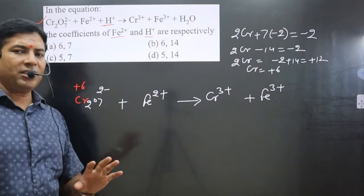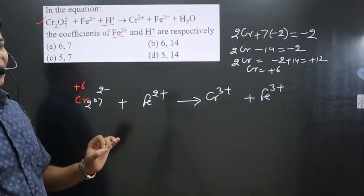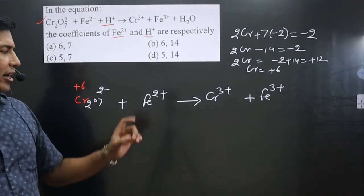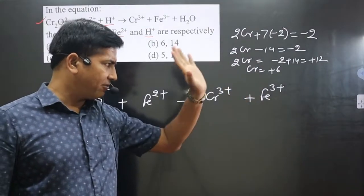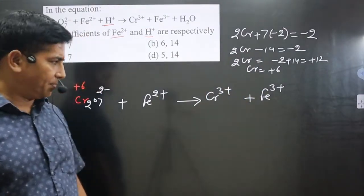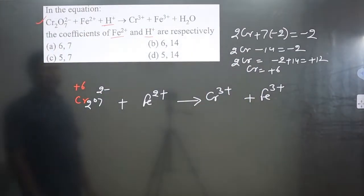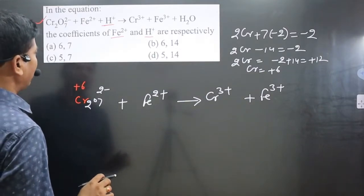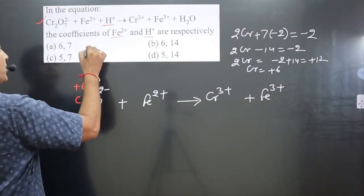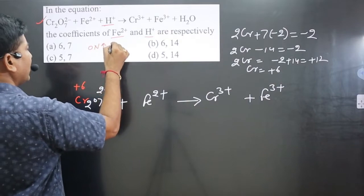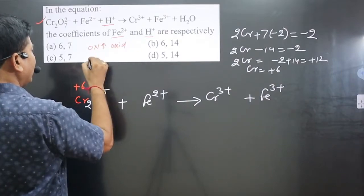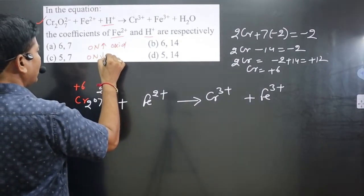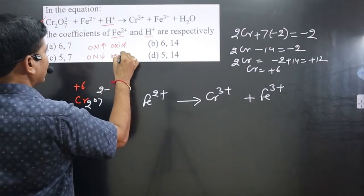Fe2+ is a monoatomic ion, so its charge equals its oxidation number — Fe2+ is +2. Similarly, Cr3+ and Fe3+ are +3 each. Always keep in mind: an increase in oxidation number means oxidation, and a decrease in oxidation number means reduction.